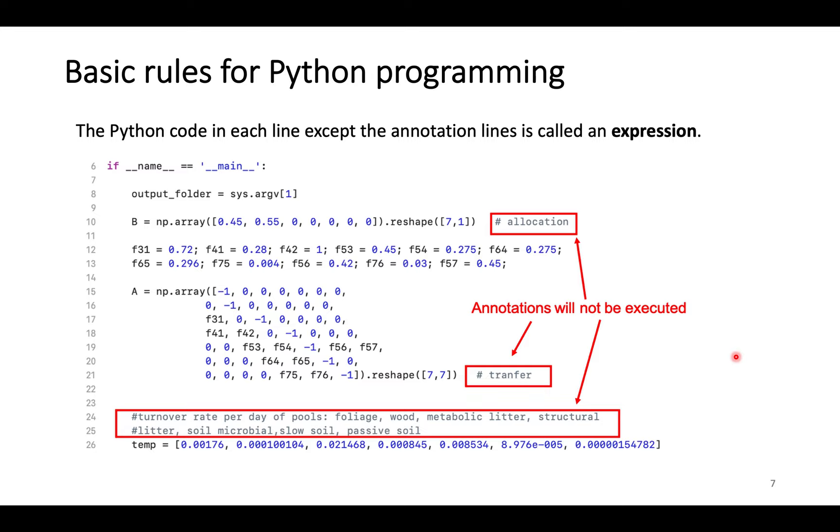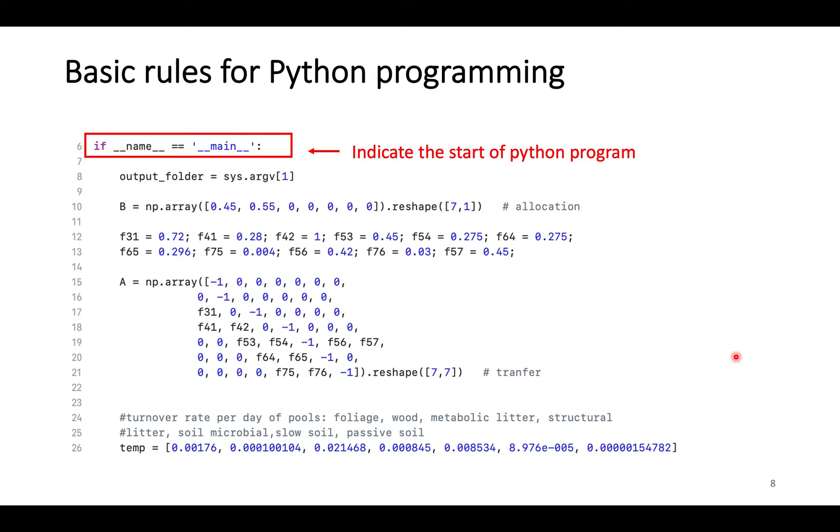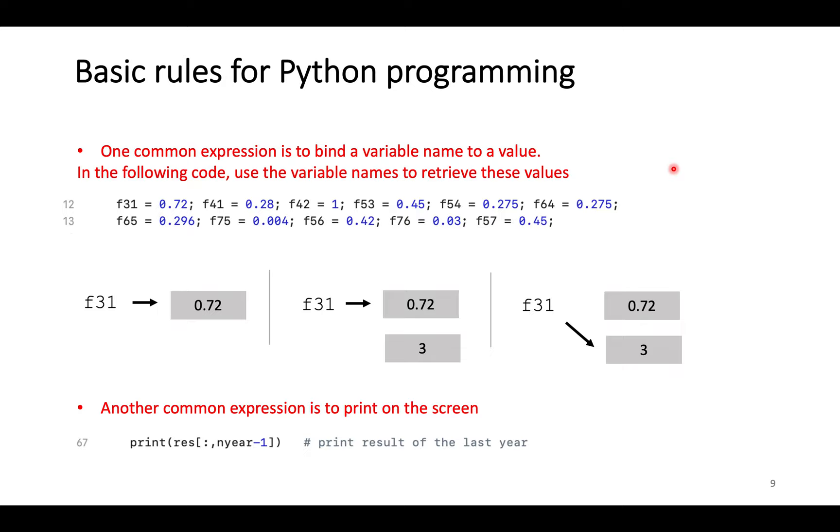The code in each line except the annotations is called an expression. It is a unit of a Python program. Annotations start with a pound sign and will not be executed. In a Python file, an expression like this one indicates the start of a Python program no matter where it occurs in the source code.